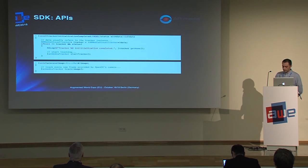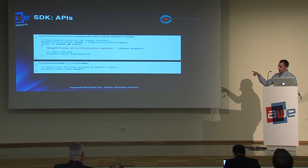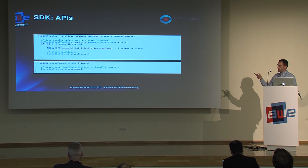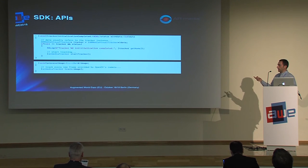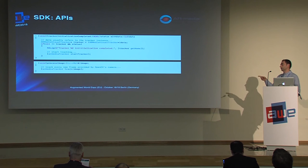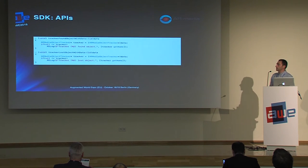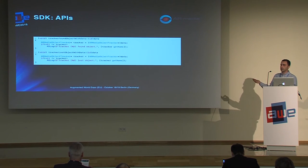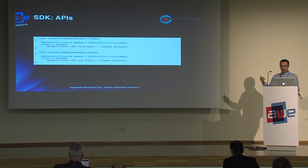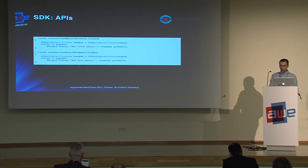With OpenCV integration you get a callback function where you pass the captured frame to the tracking engine. When tracking events occur you receive events indicating whether the object has been found or lost, and you can handle visualization tasks or other events accordingly.